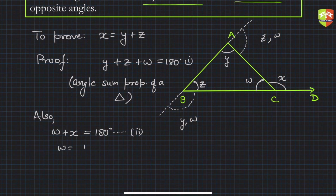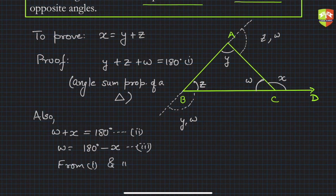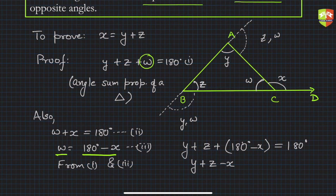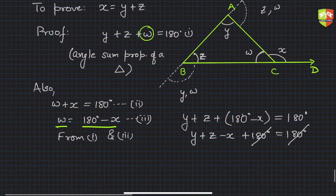From equation 2, w equals 180 degrees minus x — this is equation 3. Now substituting into equation 1: y plus z plus (180 minus x) equals 180 degrees. Simplifying, the 180 degrees on both sides cancel, giving y plus z minus x equals 0, therefore y plus z equals x. This is the exterior angle theorem.